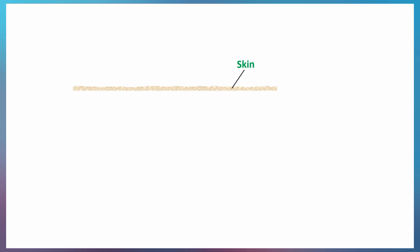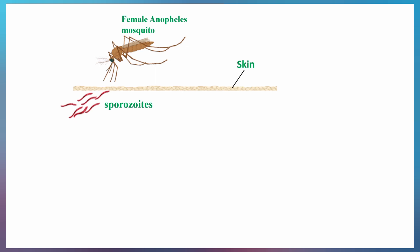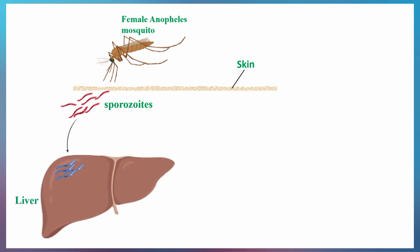The schizogonic phase starts when a female Anopheles mosquito bites a person and releases sporozoites into the bloodstream. The sporozoites then travel to the liver. The reason they go specifically to the liver is that liver cells have certain receptors on their surface which serve as binding sites for the sporozoites. The sporozoites behave like ligands, binding to these receptors and entering the liver, where they develop into schizonts.